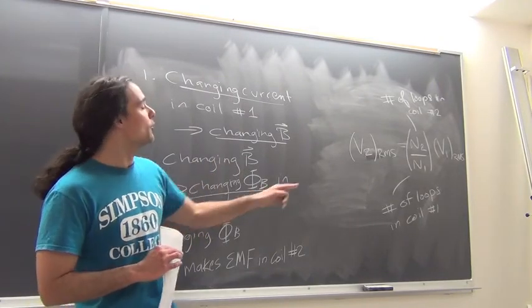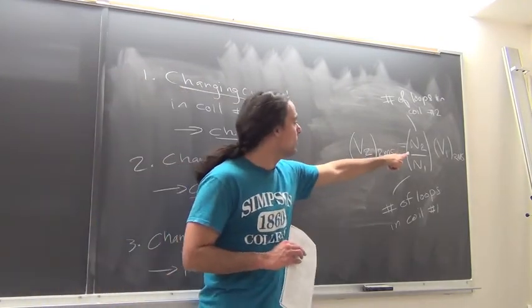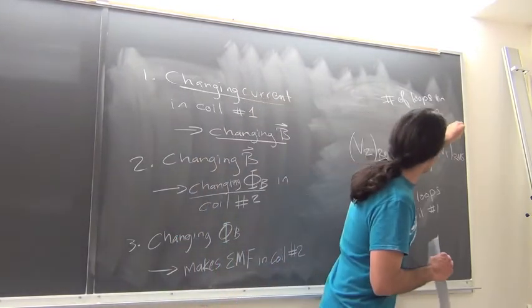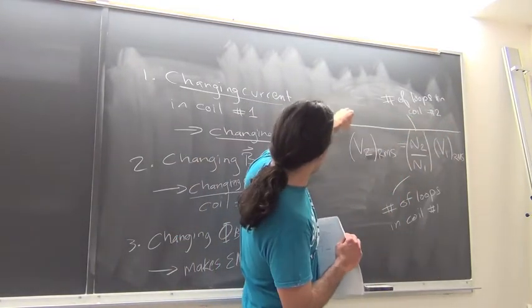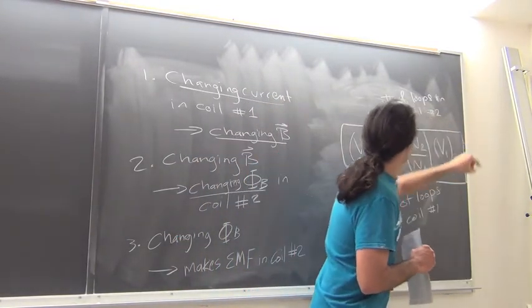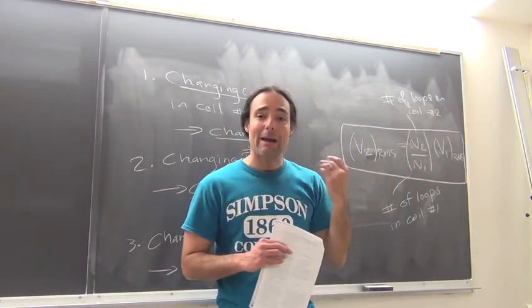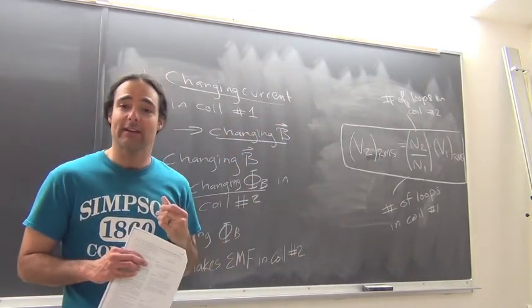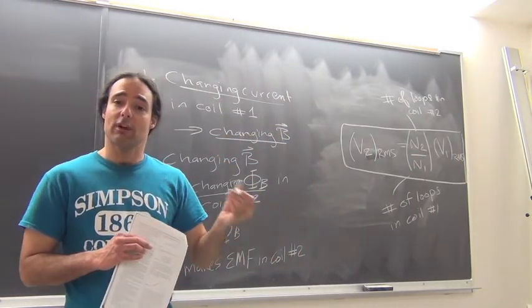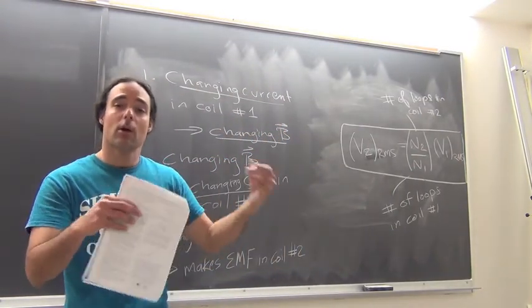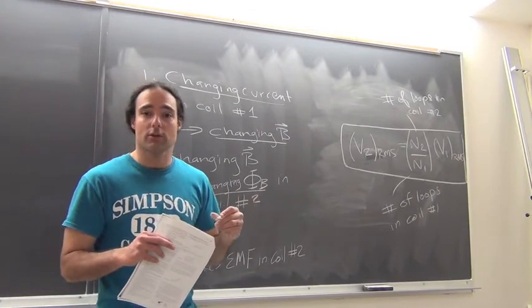It's a very simple formula related to the number of loops. If I want to know the RMS voltage in my secondary coil, it's going to be equal to the RMS voltage in coil one, times the ratio of the number of loops in coil two to the number of loops in coil one — where by 'loop' I mean how many circles of wire are in that coil. If I have more loops, I get a bigger EMF. I can also go down in voltage by having fewer loops — so I can get a smaller voltage out or a larger voltage out.